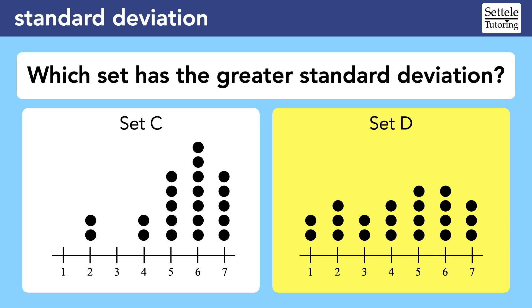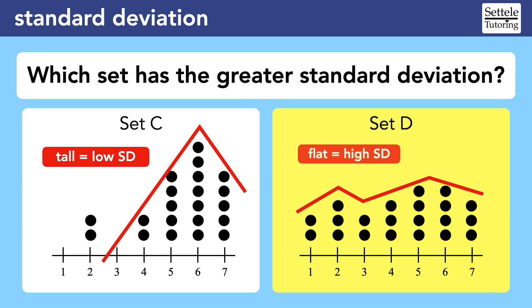Try to imagine the shape of each set. Even though set C has some outliers at 2, the overall shape is still a tall peak, which suggests low deviation because the dots are clustered around the mean, which is probably around 6. Set D has some ups and downs, but it's overall pretty flat. The mean might be around 5 or 6, but it's harder to tell. Flat data sets have higher standard deviations.